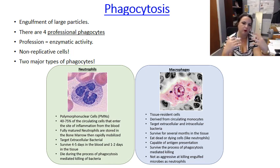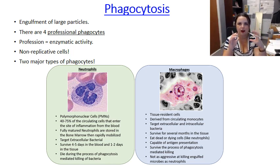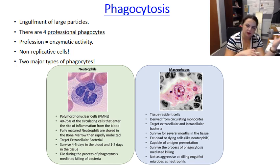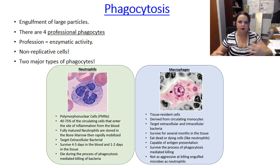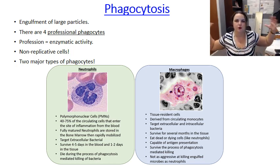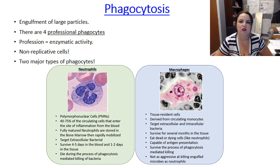Ingesting soluble molecules is part of how we get nutrients, vitamins, and other things — but this is not phagocytosis. That is endocytosis or pinocytosis. Phagocytosis is for the big stuff. It's engulfment of a larger thing.